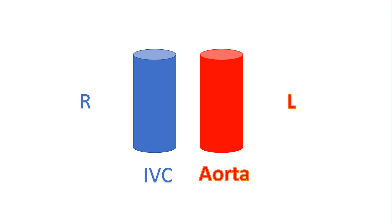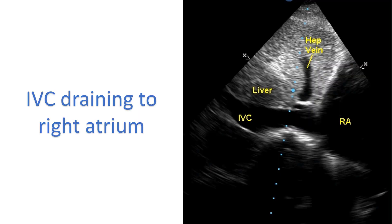Veno-atrial connection is assessed by identifying the position of the vena cavae and pulmonary veins. The inferior vena cava is normally to the right of the abdominal aorta. This relation is reversed in situs inversus. In most cases, the inferior vena cava drains to the right atrium.